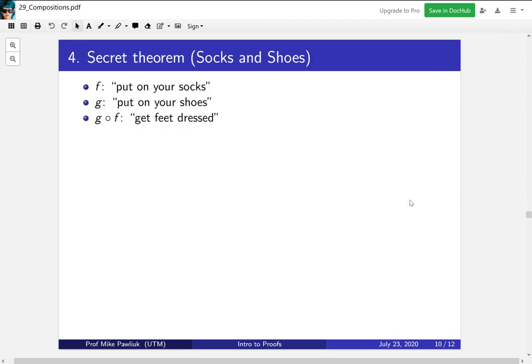Now we'll get to the secret part 4 of the theorem, about socks and shoes. Consider F to be put on your socks, and consider G to be put on your shoes. So together you could say that first apply F, then apply G means get your feet dressed, get ready to go out in the world.